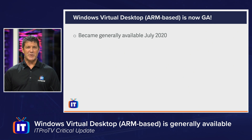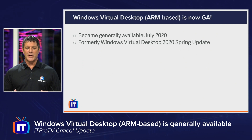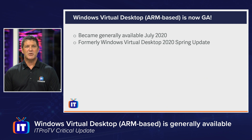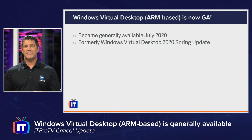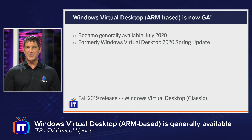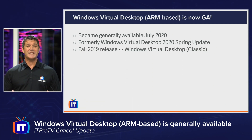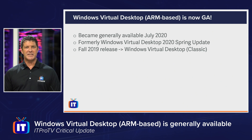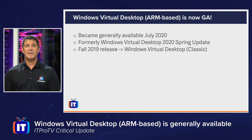Windows Virtual Desktop was released to GA in July of 2020. It was previously known as the Windows Virtual Desktop 2020 Spring Update — quite a mouthful. We had to differentiate it from the previous version, known as the Fall 2019 release, which is now called Windows Virtual Desktop Classic. The 2020 Spring Update is simply Windows Virtual Desktop. Thank you, Microsoft, for simplifying that.